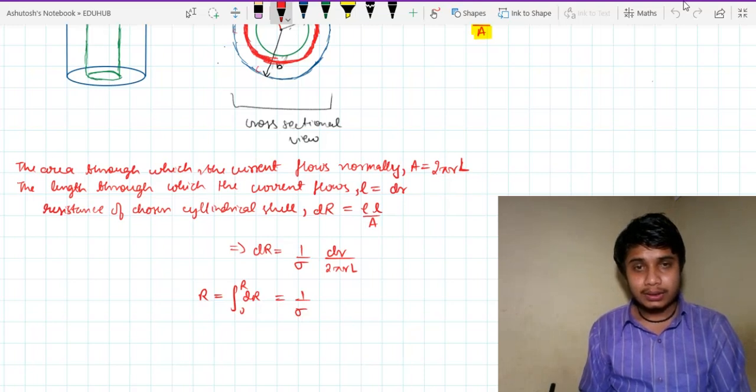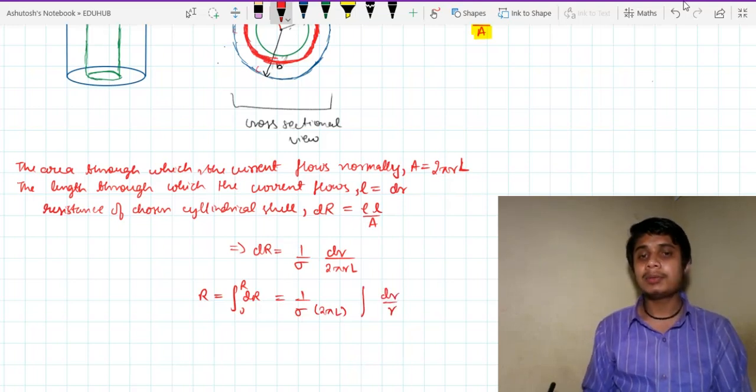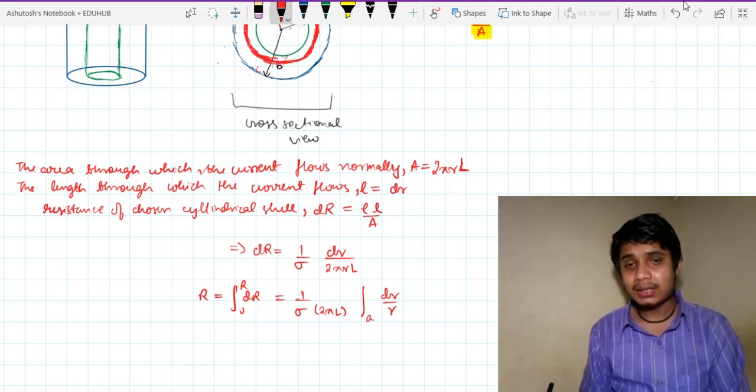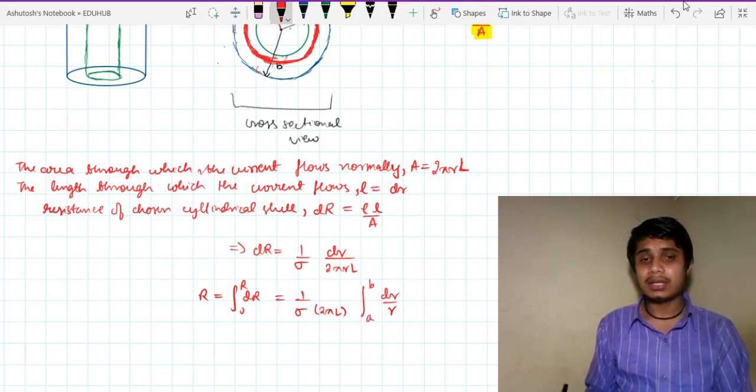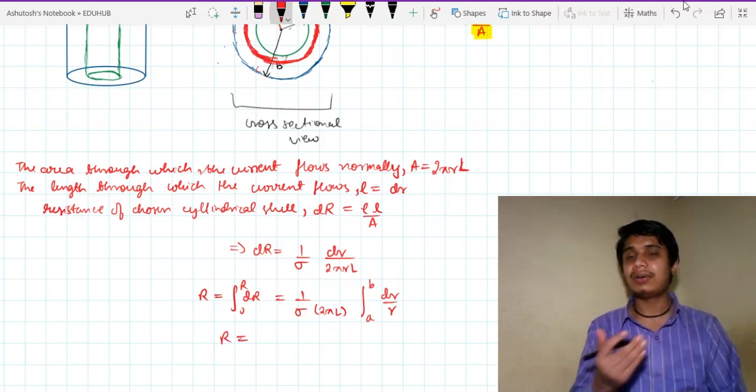1 over sigma and 2 pi L will be outside the integral. Integration will be dr over small r and what will be the limits? The small r varies from the inner radius a to the outer radius b and here we are done. As a physicist we are done. Now it is mathematics.